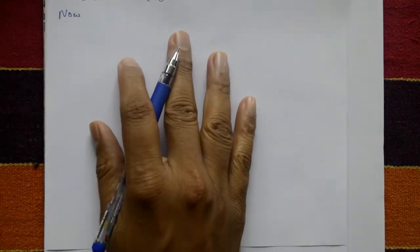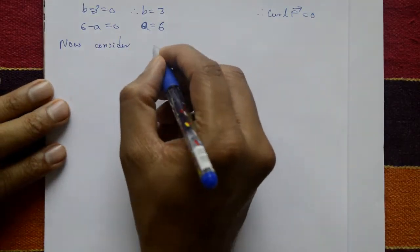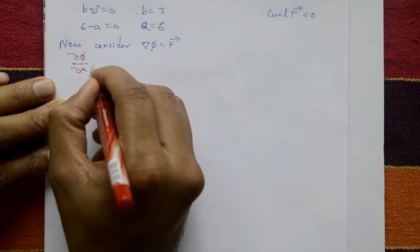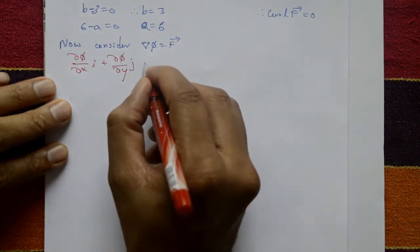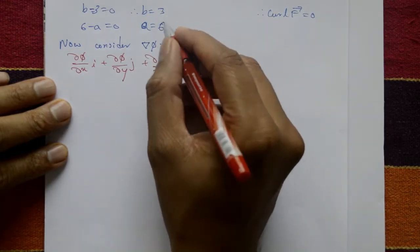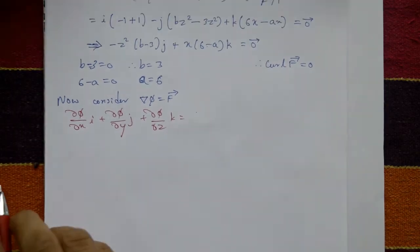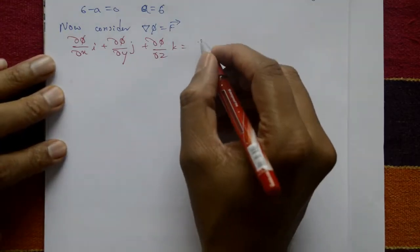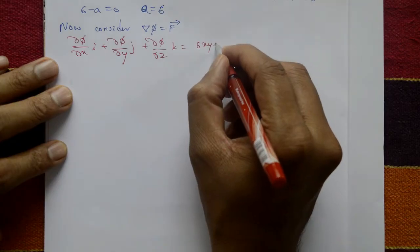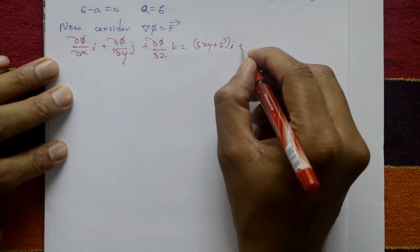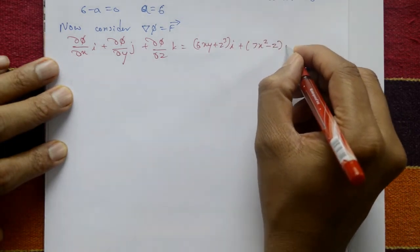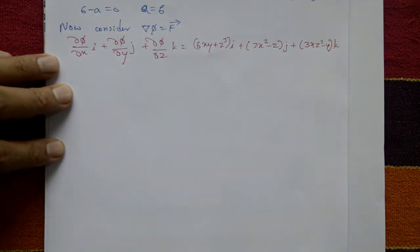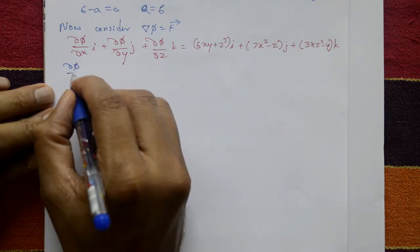Now consider del φ = vector F. This means ∂φ/∂x · i + ∂φ/∂y · j + ∂φ/∂z · k = vector F. Substituting a = 6 and b = 3, the vector F becomes (6xy + z³)i + (3x² - z)j + (3xz² - y)k.